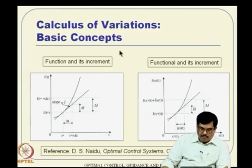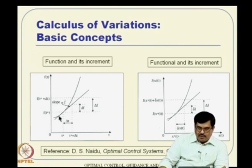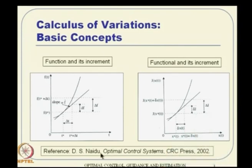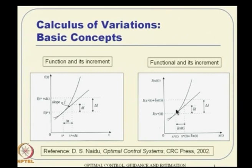So, this is the concept we discussed: on one side there is a function and its increment, and on the other side is a functional and its increment, and both appear quite similar. The x-axis turns out to be a free variable—time—whereas in the functional case it is x of t. So it can be interpreted as a function of a function, where delta x can be a variation with respect to time. The increment delta f is approximated as df, and similarly delta j is approximated as delta j—a slight notational change to indicate these are variations.